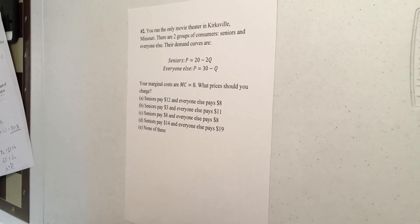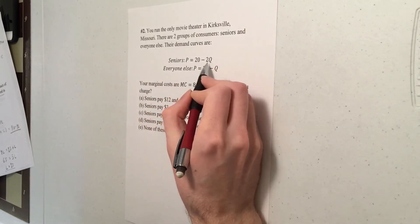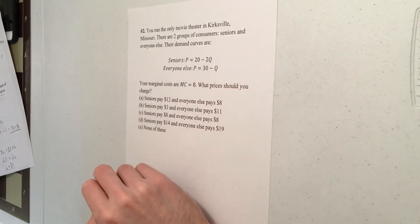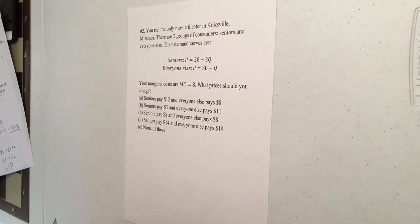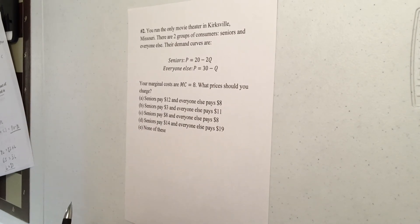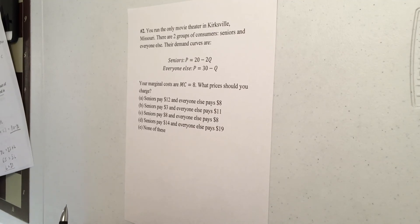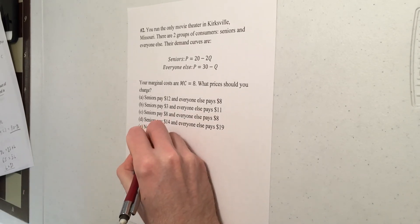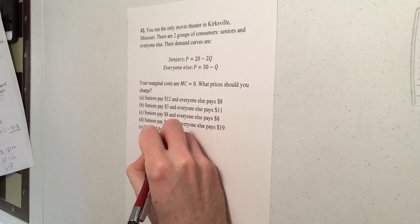Problem number two in part two in the harder section. So we have a monopoly on movie theaters and we have seniors and everyone else. The seniors have a lower willingness to pay and they're also more price sensitive. So marginal costs are eight. And we're going to price discriminate. We're going to charge a different price to each group here.